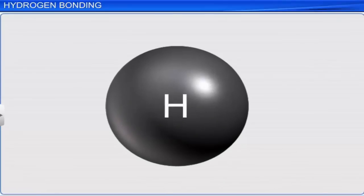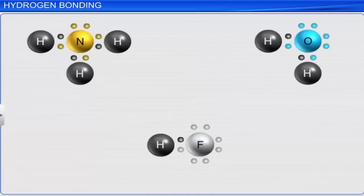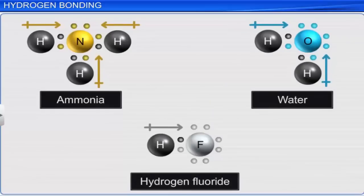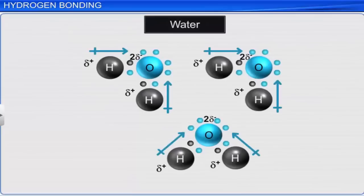When hydrogen forms a covalent bond with highly electronegative elements such as nitrogen, oxygen, and fluorine, the shared pair of electrons is attracted more towards the electronegative atom. Due to this, hydrogen gains a fractional positive charge while the electronegative atom gains a partial negative charge, making the bond polar covalent. When many molecules of these compounds are present together, the partial positively charged hydrogen of one molecule is attracted to the partial negatively charged electronegative atom of another molecule. This weak electrostatic force of attraction is called a hydrogen bond, which is weaker than a covalent bond.